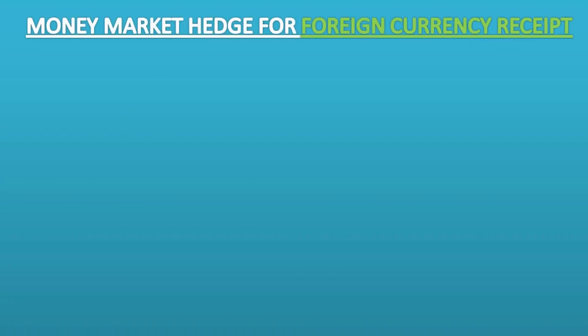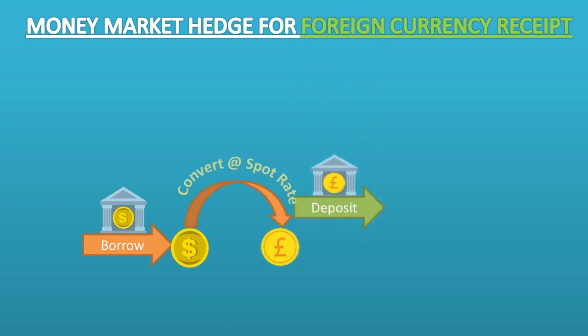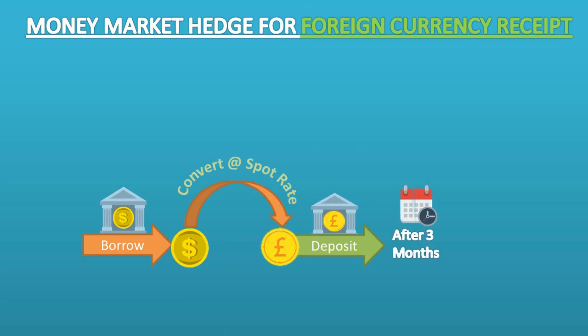A similar technique can be used to cover a foreign currency receipt from a trade receivable, to manufacture a forward exchange rate. Follow these steps: step one, borrow an appropriate amount in the foreign currency today; step two, convert it immediately to home currency at the spot rate; step three, place this on deposit in the home currency; step four, when the receivable cash is received, repay the foreign currency loan, then take the cash from the home currency deposit account.